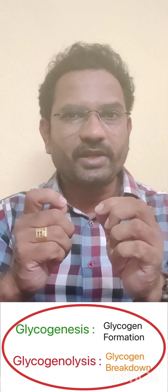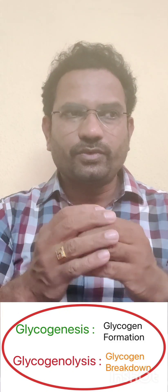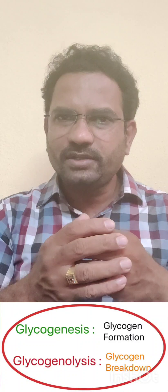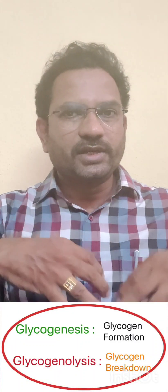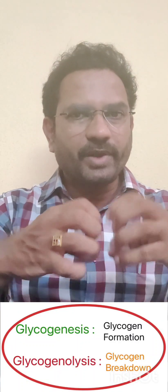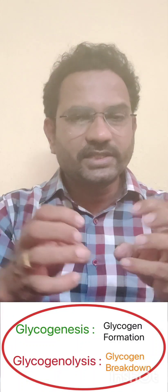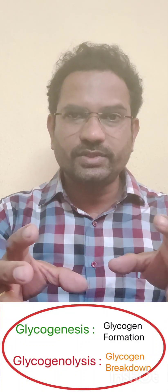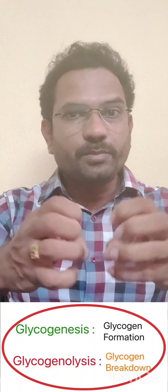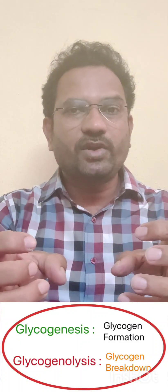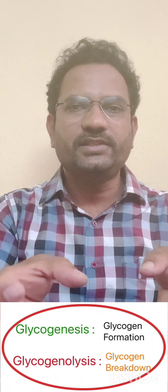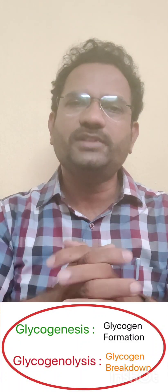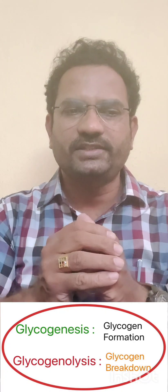When there is a requirement — for example, during fasting when people don't take food — the reserve glycogen breaks down and releases glucose. This breakdown of glycogen is called glycogenolysis.